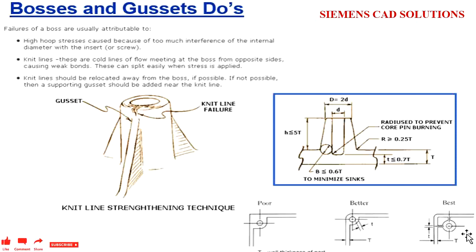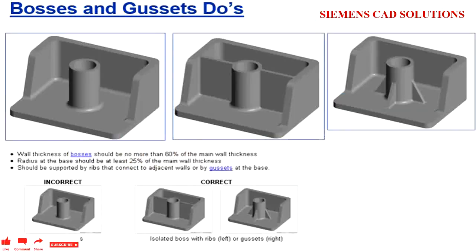Keep a small wall thickness around the boss. Here are some CAD model examples. This is the raw boss without any supports. A perpendicular or horizontal support is good for the boss, and we can also have gussets like this. Wall thickness of the boss should be no more than 60% of the wall thickness.